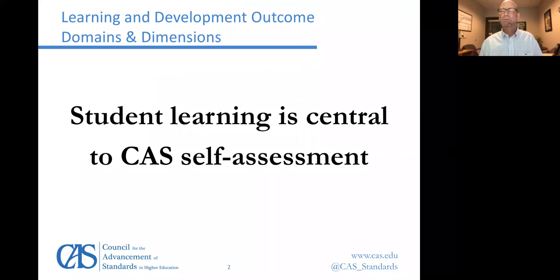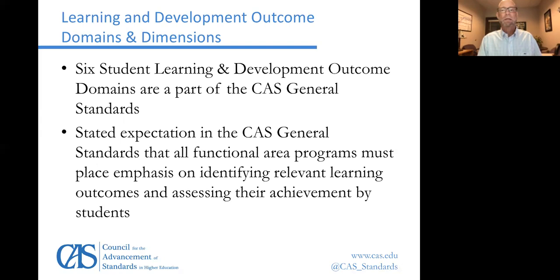Student learning is central to CAS self-assessment. A lot of people think we're just looking at program evaluation or program assessment — understanding how effective a program is — but really the ultimate goal for CAS guidelines and standards is student learning and development. All of that program and assessment work should be centered on and focused toward student learning and development. There are six student learning and development outcome domains that are part of the general standards, already built in, and we ask departments and programs to think through which are most appropriate for theirs.